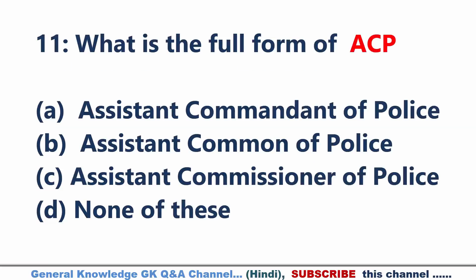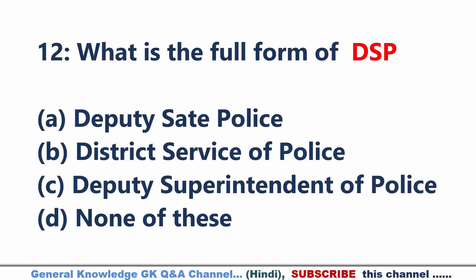What is the full form of ACP? Answer C: Assistant Commissioner of Police. What is the full form of DSP? Answer C: Deputy Superintendent of Police.